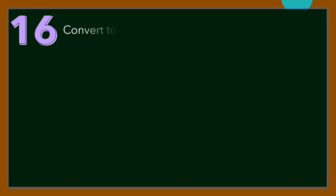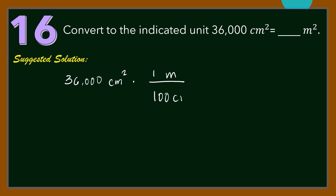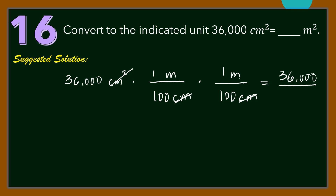Number 16. Convert to the indicated unit: 36,000 squared centimeters equals how many squared meters? For our solution, let us multiply 36,000 squared centimeters by the ratio between meters and centimeters. We know that 1 meter equals 100 centimeters. So 36,000 divided by 100 times 100 is 10,000, giving us 36 divided by 10, or 3.6 squared meters.